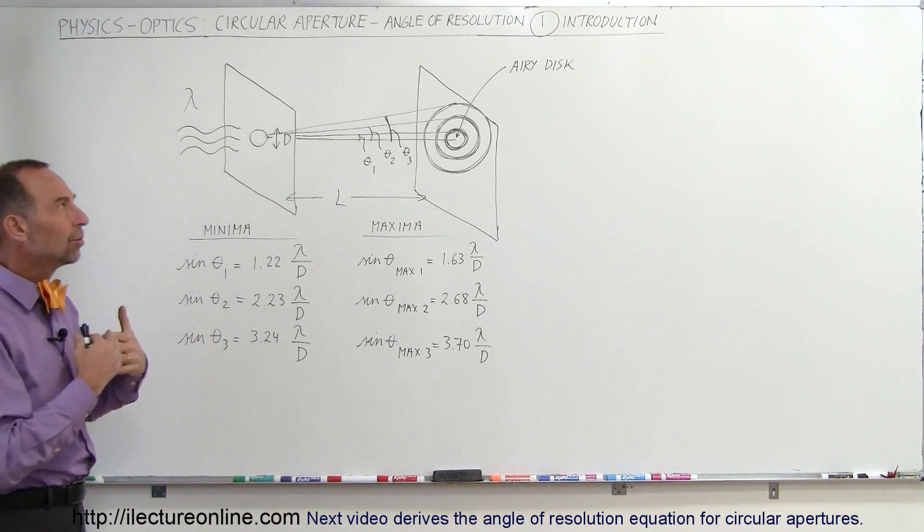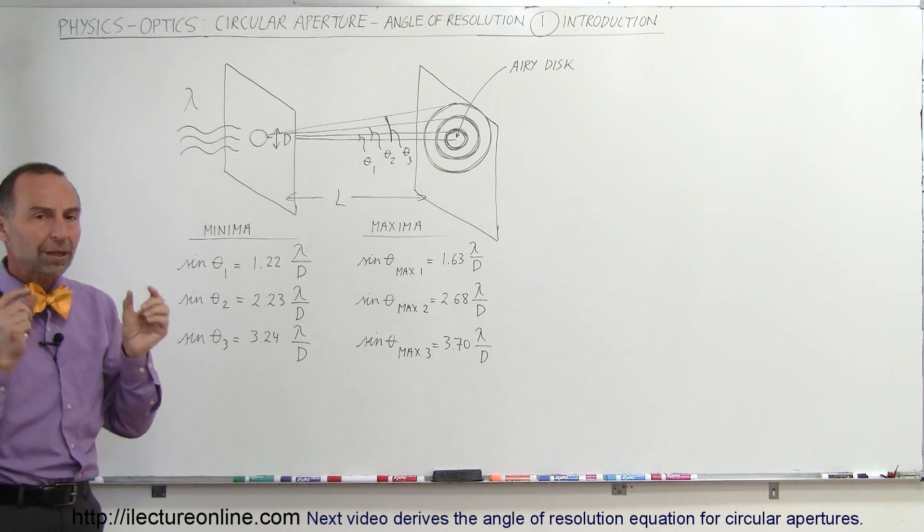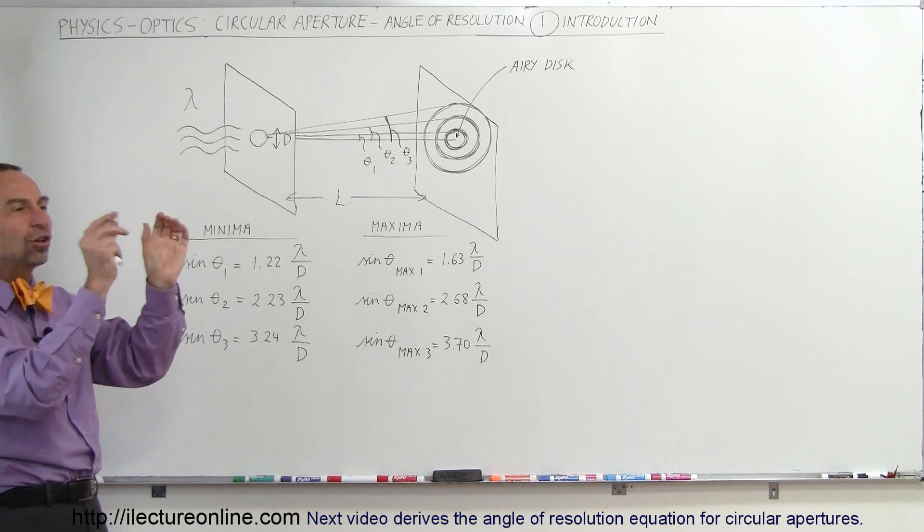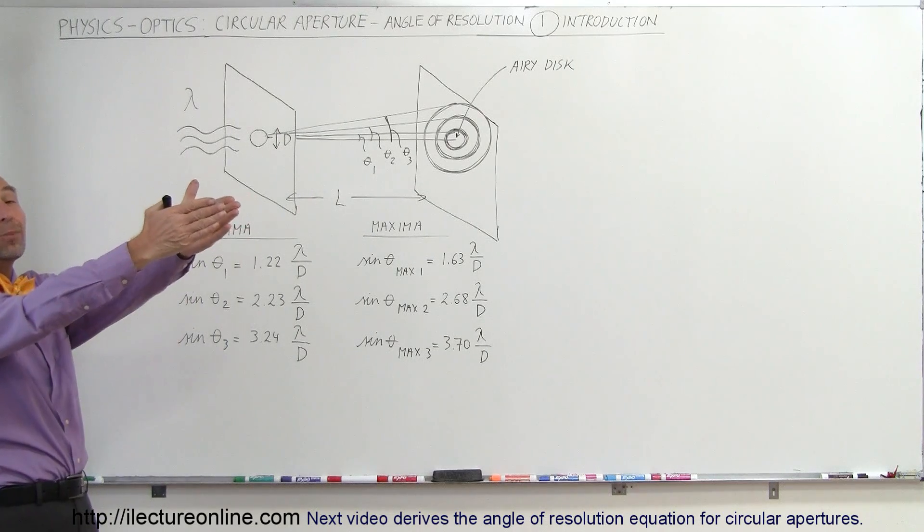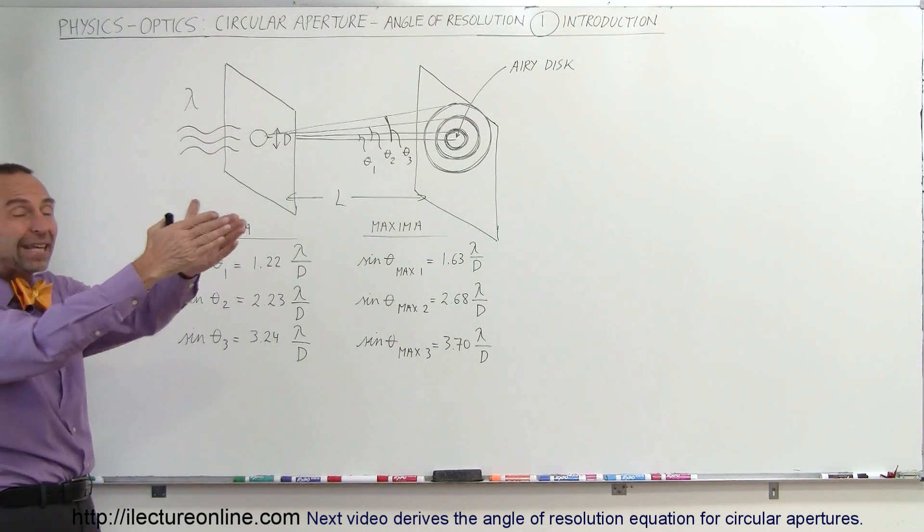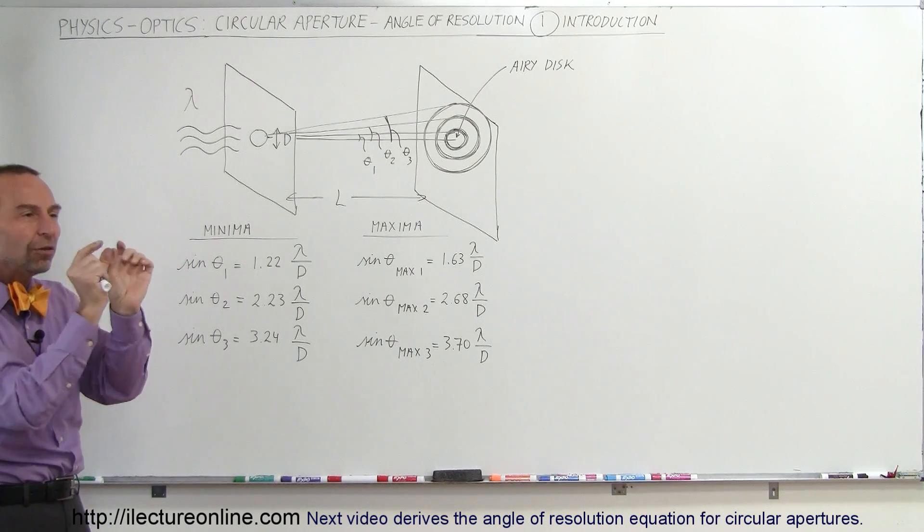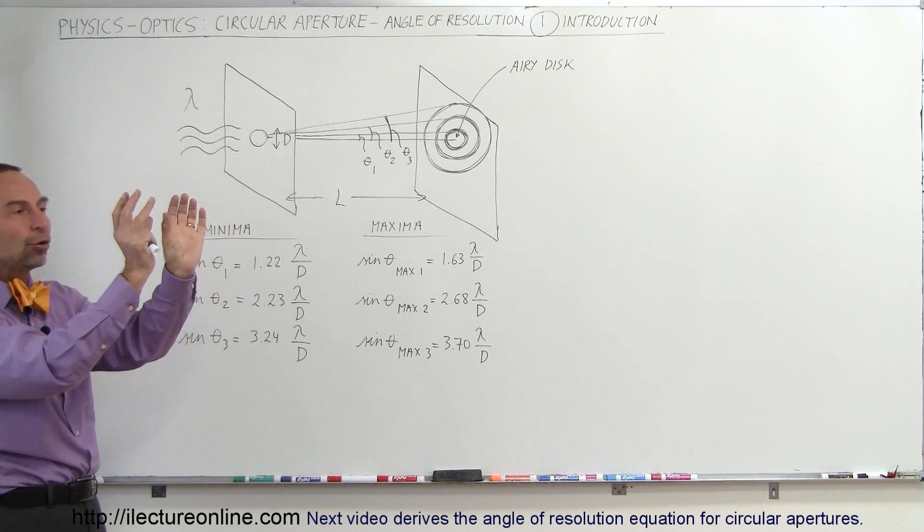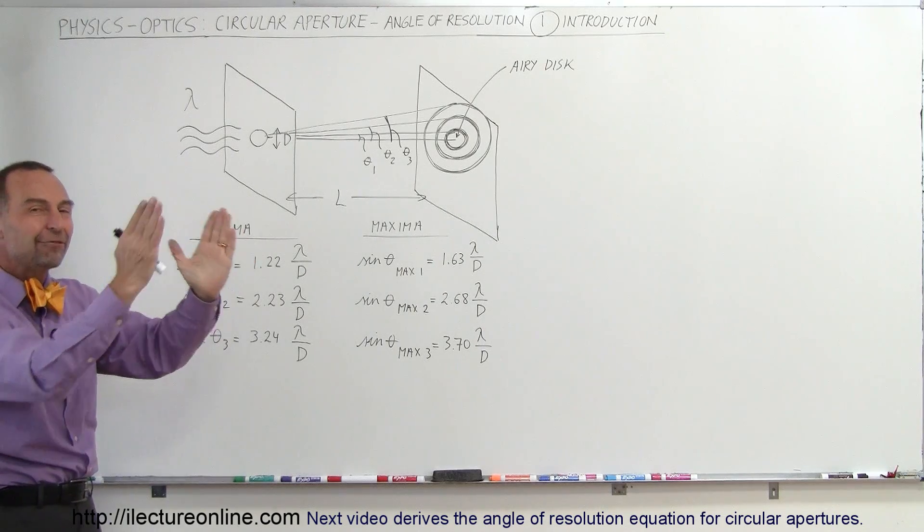Now, how do we get the resolution angle from that, or the ability to resolve things? Well, whenever we see something at a large distance, the angle between them becomes very, very small. The smaller the angle, the more difficult it becomes to resolve the two, because what happens is the diffraction patterns begin to merge for objects that are very far away and very close together.